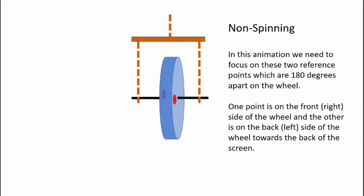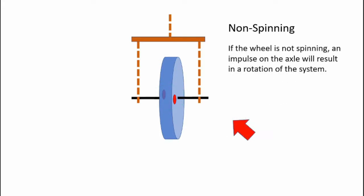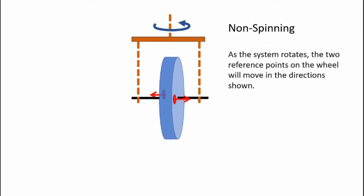Here's a simple animation of the free-hanging wheel system. We want to focus on these two reference points which are 180 degrees apart on the wheel. One point is on the front or the right side of the wheel and the other is on the back side of the wheel towards the left. Now for a non-spinning system, if you apply an impulse to the axle of the wheel the system will rotate in the counterclockwise direction as indicated by the arrow. As the system rotates, the two reference points on the wheel will move in the direction shown — the point on the right will move towards the right and the point on the back will move towards the left. Now let's take a look at the real system and see what really happens.